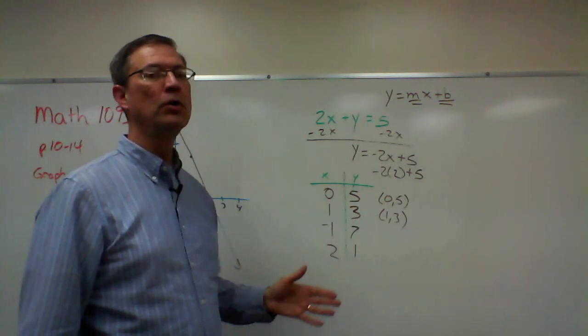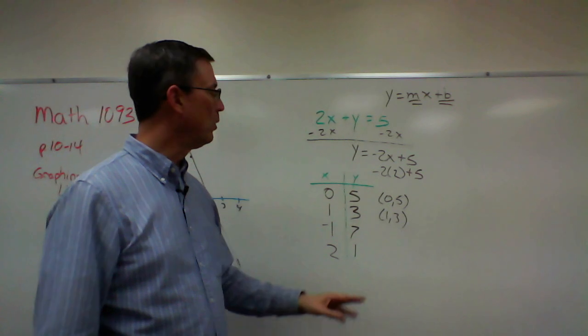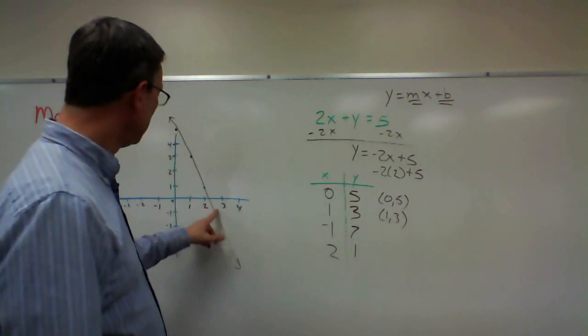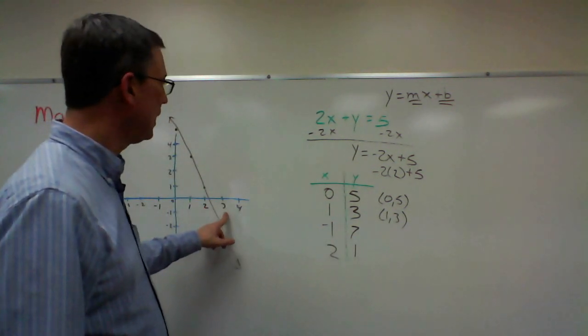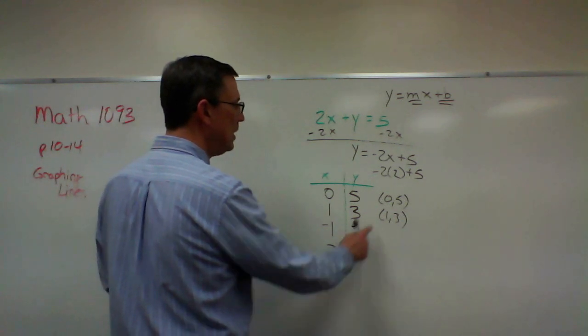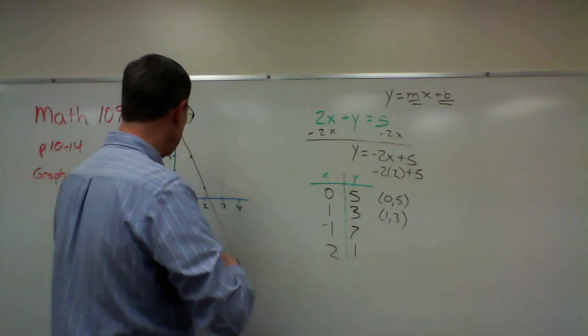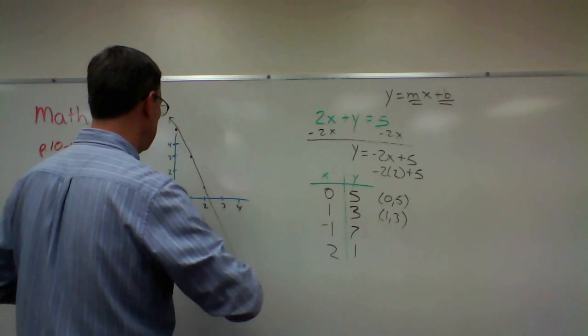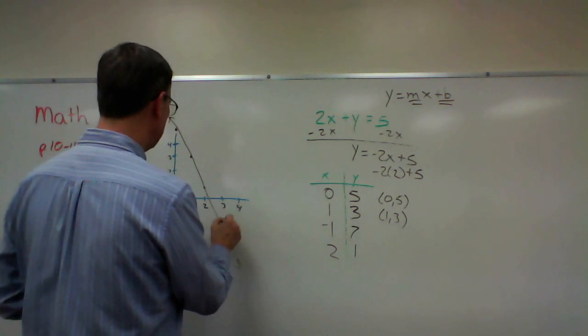If done correctly, they will always be lined up no matter what number I plug in. I'm looking down here and I see three. I could have plugged in three, which would have given me negative six plus five is negative one.